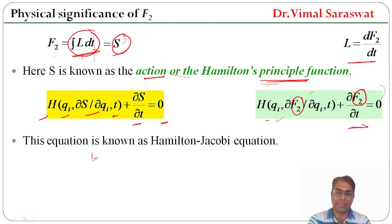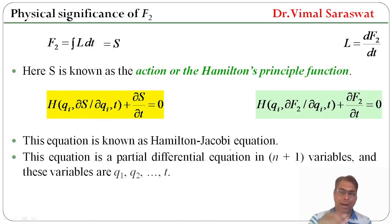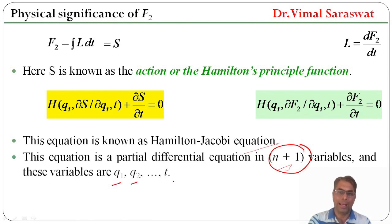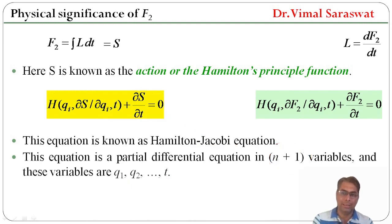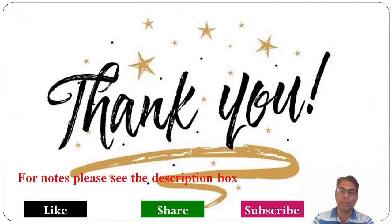Since H + ∂F2/∂t = 0, replacing F2 by S gives the Hamilton-Jacobi equation: H(q_i, ∂S/∂q_i, t) + ∂S/∂t = 0. This equation is a partial differential equation in n+1 variables: q_1, q_2, …, q_n, and time. Here we end our session. In today's lecture of classical mechanics we have discussed the Hamilton-Jacobi equation. Goodbye.